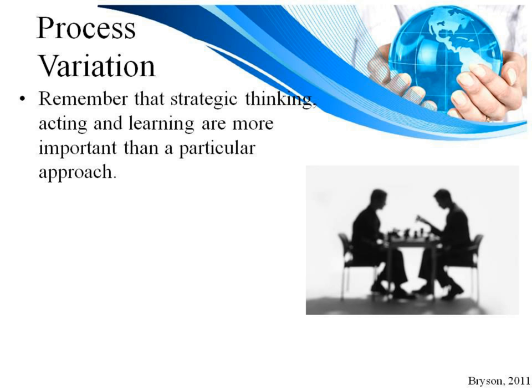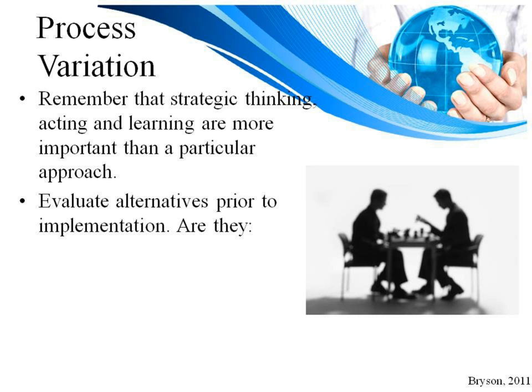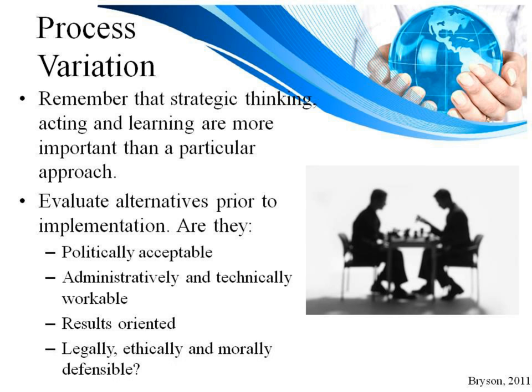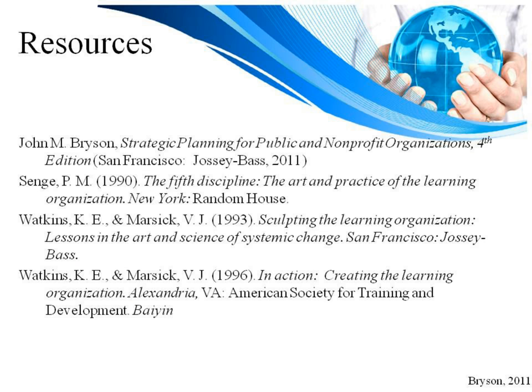Remember that strategic thinking, acting, and learning are more important than a particular approach. Bryson has several points regarding process design and action plans beginning on page 245 of the fourth edition. Evaluate the alternatives prior to implementation: Are the alternatives politically acceptable? Are they administratively and technically workable? Are they results-oriented — what are we measuring and will it tell us what we need to know? And are they legally, ethically, and morally defensible? That concludes this session on formulating strategy. Thanks for listening.